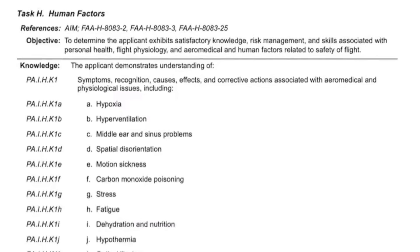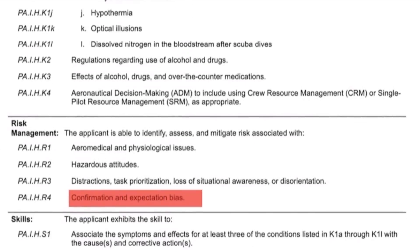Task H adds a risk element regarding confirmation and expectation bias. This isn't new — in the 2018 version, confirmation and expectation bias were called out in several places. What is new is that they've been called out in the human factors task. So be prepared for a larger discussion on what these are and the risks associated with them.